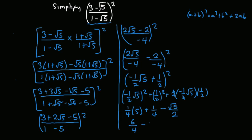So we have 5/4 plus 1/4 minus root 5 over 2. Adding 5/4 and 1/4 gives 6/4, which simplifies to 3/2. So we get 3/2 minus root 5 over 2, which gives us (3 minus root 5) all over 2.